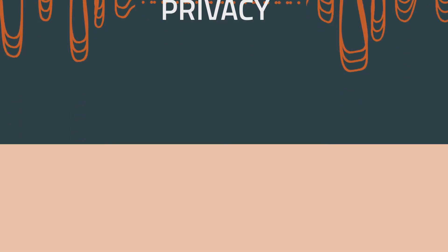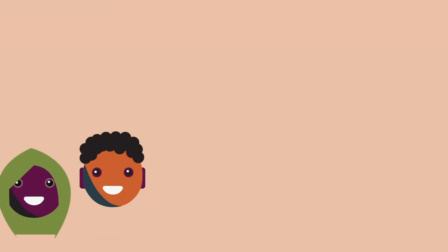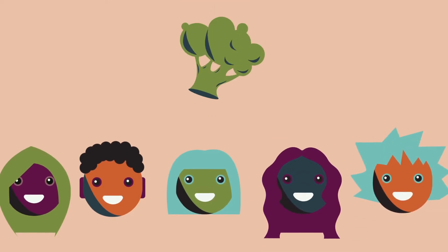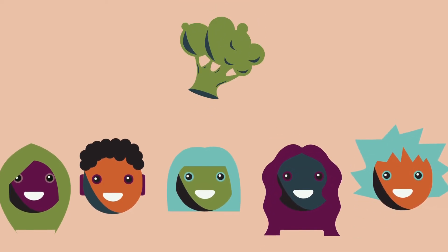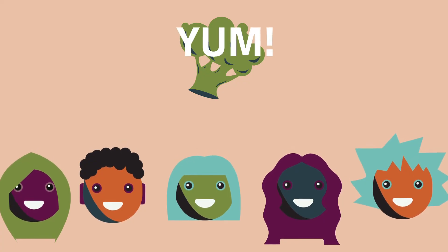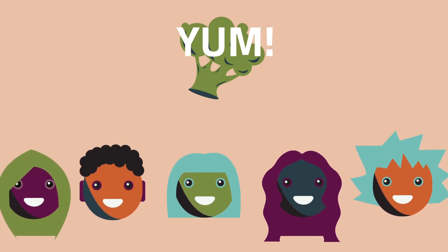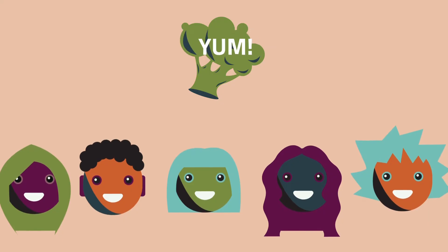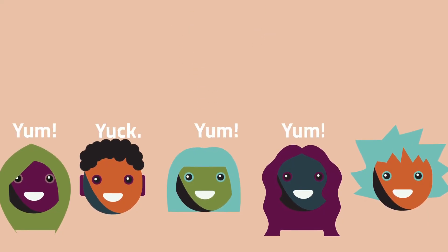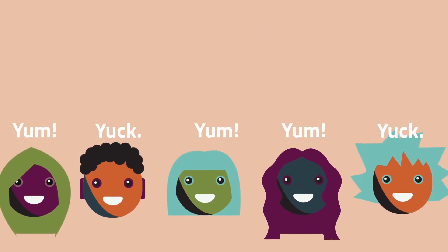For example, imagine a survey that asks people about whether they like broccoli. We want to know the group's collective opinion about broccoli, but not each person's original answer. The problem is, once we get the results of this survey, we can still see every person's private opinion.